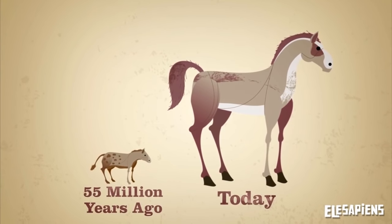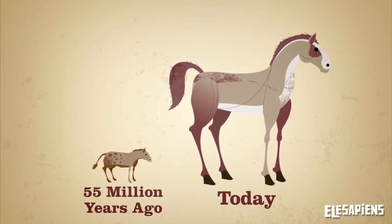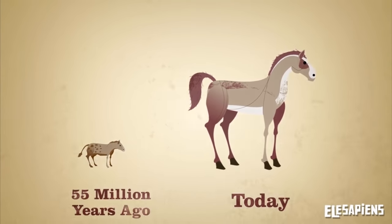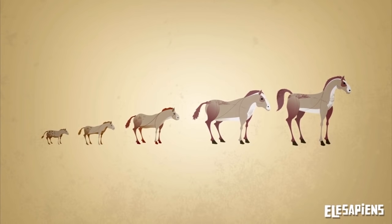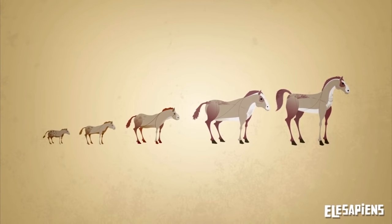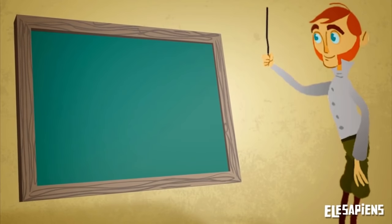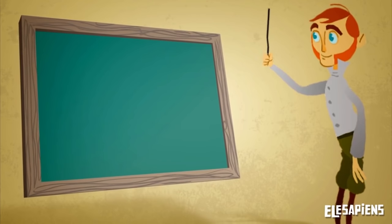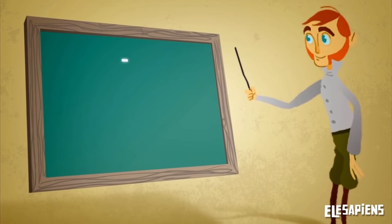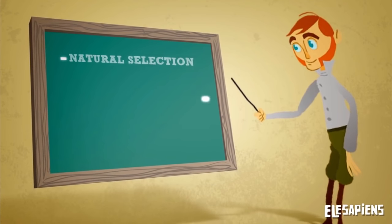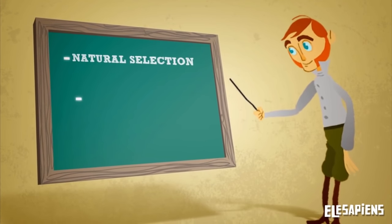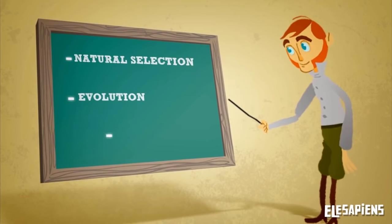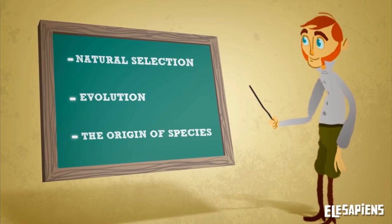Rather, each one had changed and altered over time. Three concepts are important for understanding Charles Darwin's theories: natural selection, evolution, and the origin of species.